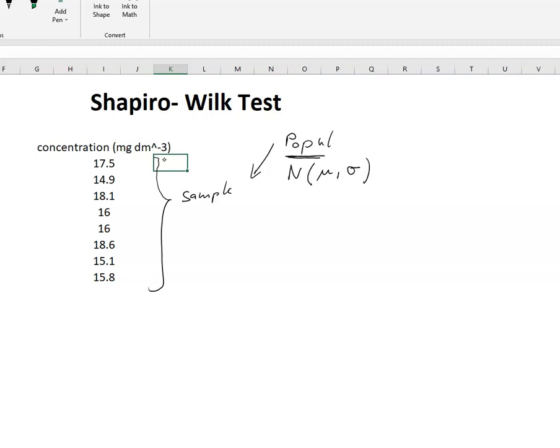But we can employ this Shapiro-Wilk test which basically checks whether the population from which we have taken the sample, whether the distribution of this population is equal to a normal distribution with the parameters mu and sigma, the population parameters for the mean and the standard deviation.